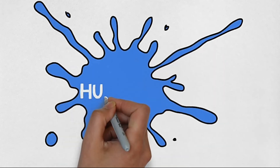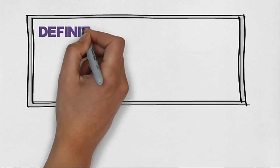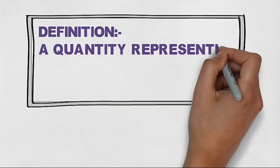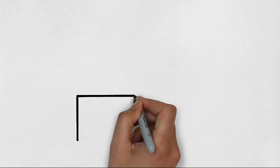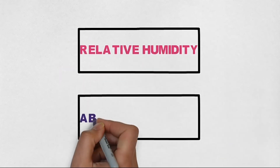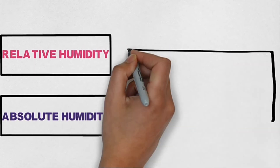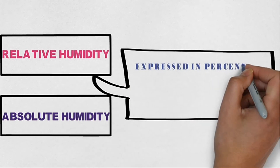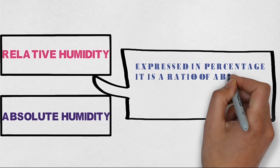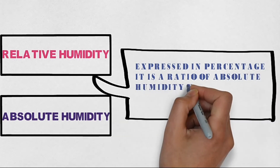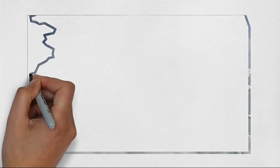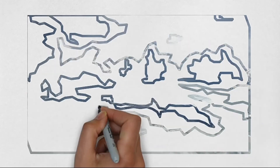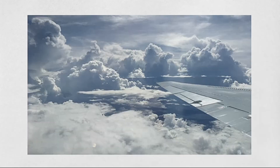A property similar to density is humidity. Humidity is defined as the quantity representing the amount of water vapor in the atmosphere or air. There are two types: relative humidity and absolute humidity. Relative humidity is the amount of water vapor present in the air expressed as a percentage of the amount needed for saturation at the same temperature. It is the ratio of absolute humidity to maximum humidity — in simple terms, how much water vapor is present relative to the maximum it can hold.